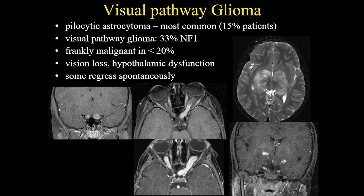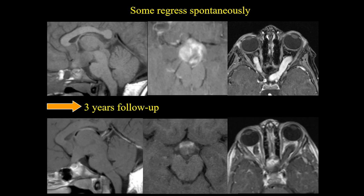Clinically, the patient can present with visual loss, hypothalamic dysfunction, and in some cases tumors can regress spontaneously. You have here a case of asymmetrical enlargement of the optic nerves with contrast enhancement and also some extension to the visual pathway on T2 and coronal T1 post-gadolinium. As I said, some gliomas can regress spontaneously — there is an example here. As you can see in the follow-up MRI studies, there is less contrast enhancement and also the lesion size is reduced.